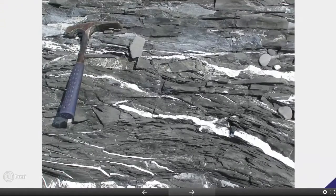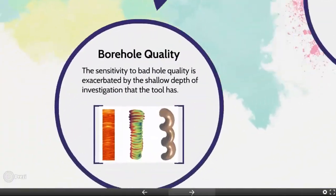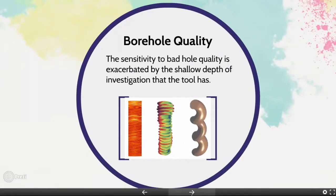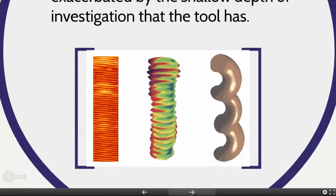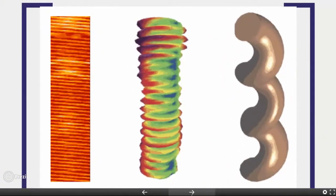The measurement point is taken to be halfway between the two detectors. The sensitivity to bad hole quality is exacerbated by the shallow depth of investigation. The formation density log should therefore be run with the caliper tool, and the caliper reading should be used to judge the likely quality of the formation density log data. The borehole quality as demonstrated by the density tool is shown in the picture.